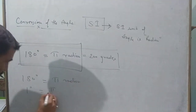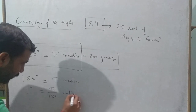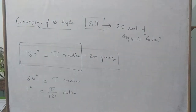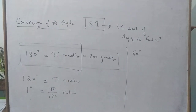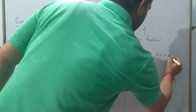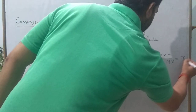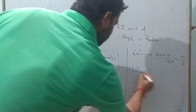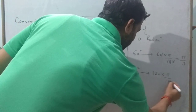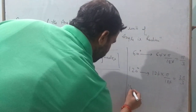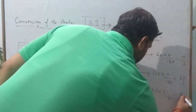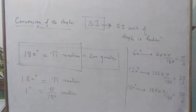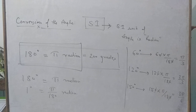To convert any angle from degrees to radians, multiply by pi by 180. For example, 60 degrees times pi by 180 equals pi by 3 radians. 120 degrees times pi by 180 equals 2 pi by 3 radians. 150 degrees times pi by 180 equals 5 pi by 6 radians. So whatever angle is given in degrees, just multiply by pi by 180.